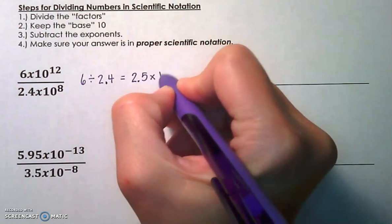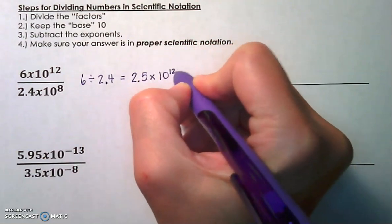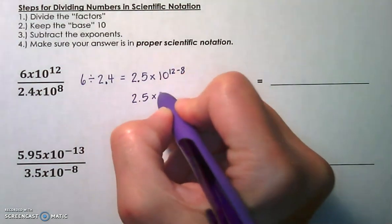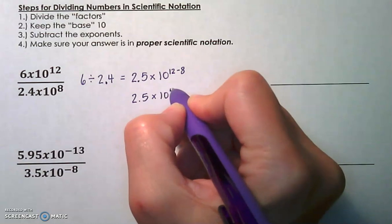Keep the base of 10, and we are going to subtract 12 minus 8. So once we subtract those exponents, we're going to get 10 to the fourth.